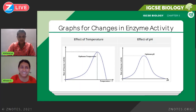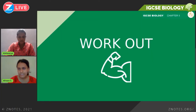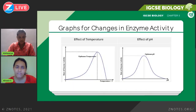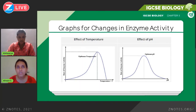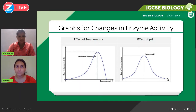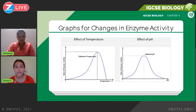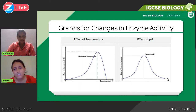You'll also need to know some common enzyme names, which we'll look at in more detail in Chapter 7 on Human Nutrition. These include amylase, protease, peptidase, trypsin, pepsin, and lipase. These are all enzymes specific to breaking down fats, proteins, and carbohydrates. That's everything for the enzyme chapter — now we'll look at some practice questions.